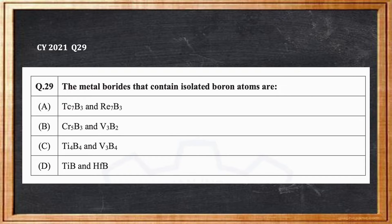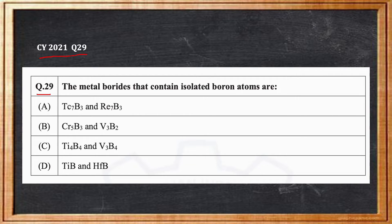In this video we will be discussing question number 29 from the Chemistry GATE exam 2021. The question is: the metal borides that contain isolated boron atoms are — option A: Tc7B3 and Re7B3, option B: Cr5B3 and V3B2, option C: Ti4B4 and V3B4, option D: TiB and HfB. Let's see how to solve this problem.